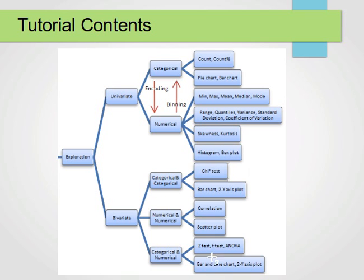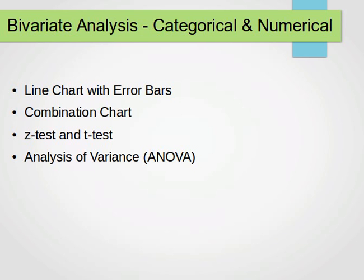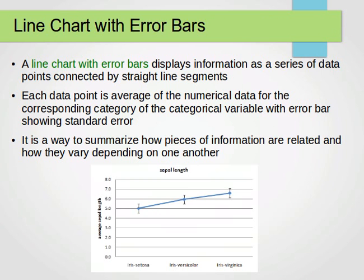We'll be doing z-test, t-test, and bar and line charts. We'll do the analysis of variance or ANOVA in the next video. So we have four ways of doing it: line charts with error bars, combination charts, z-test and t-test statistics, or analysis of variance or ANOVA. In this video I'll cover these three; in the next video I'll show you how to do analysis of variance.